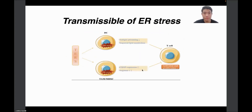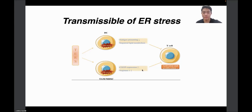I want to talk about the immunosuppressive effects of TLS. TLS not only attenuates antigen-presenting ability and impairs lipid metabolism of dendritic cells, but also increases CHOP expression and arginase-1 production of TAMs or MDSCs, all of which inhibit the activation and proliferation of T cells. Therefore, anti-tumor immunity is undermined and cancer progression is promoted.